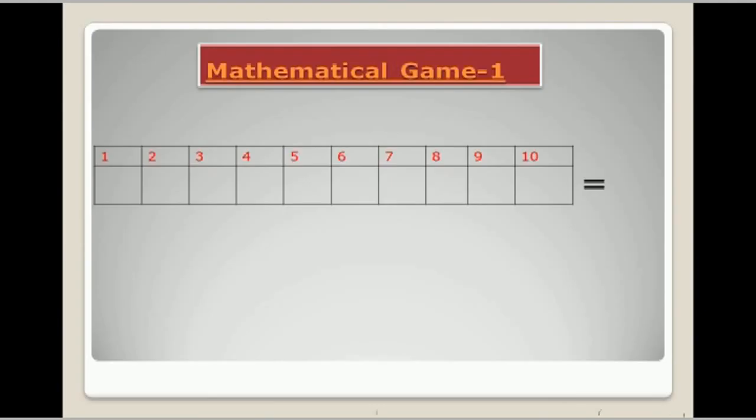Now let us start game number 1. I would like to play with you. Now there are 10 boxes. Now it is your turn. Write any 2 numbers, suppose you write 3 and 2. Now add these 2 numbers, you will get 5.